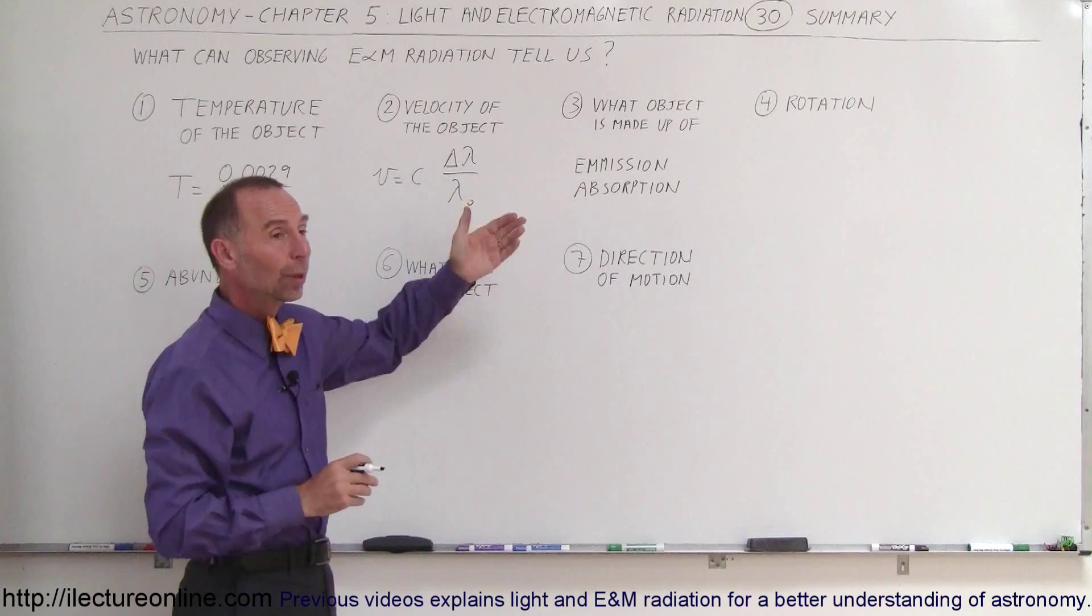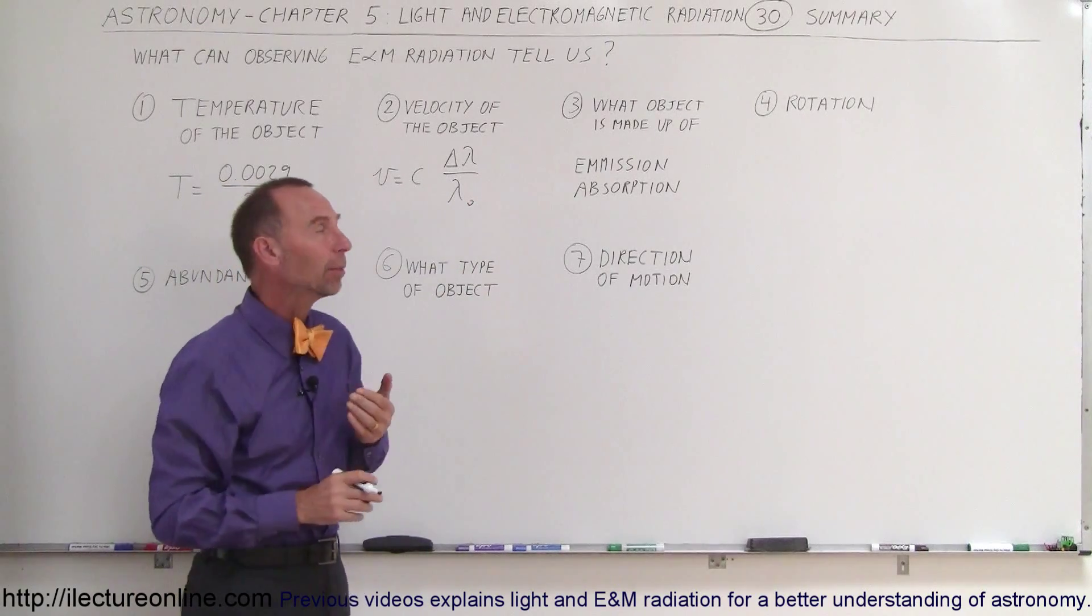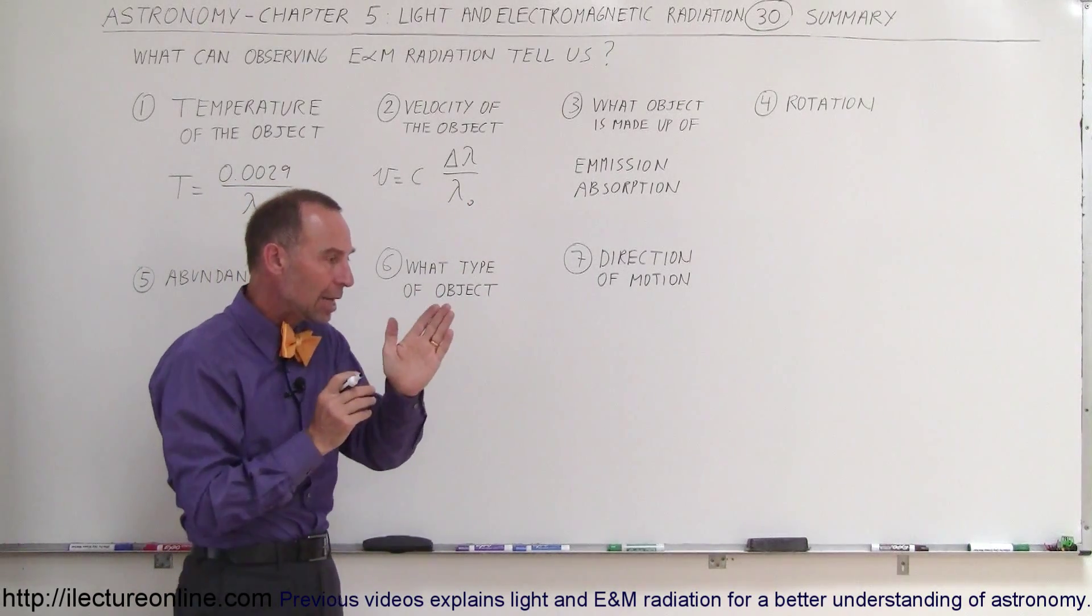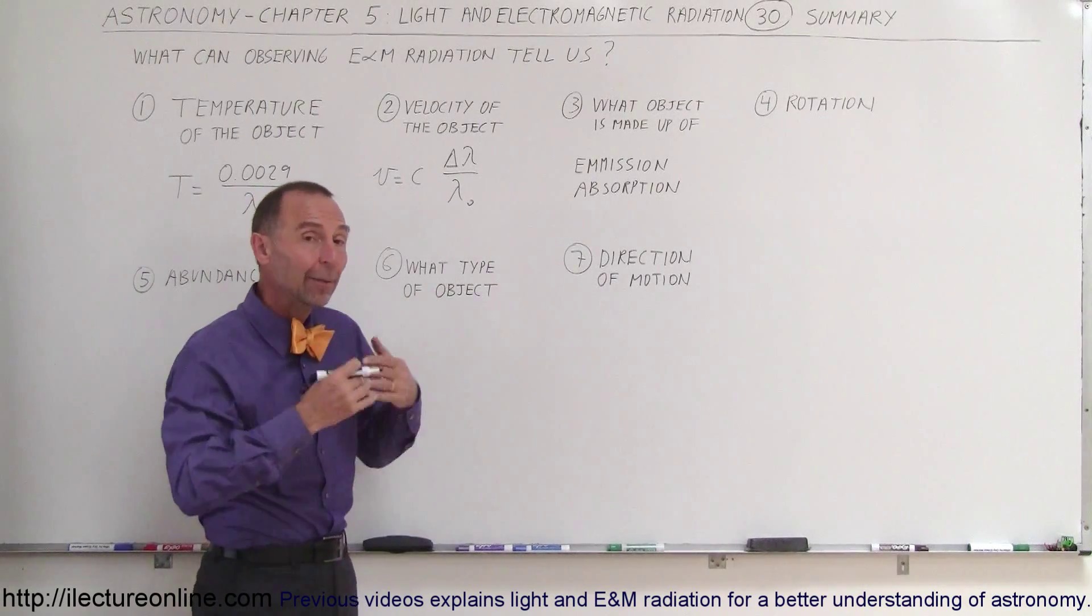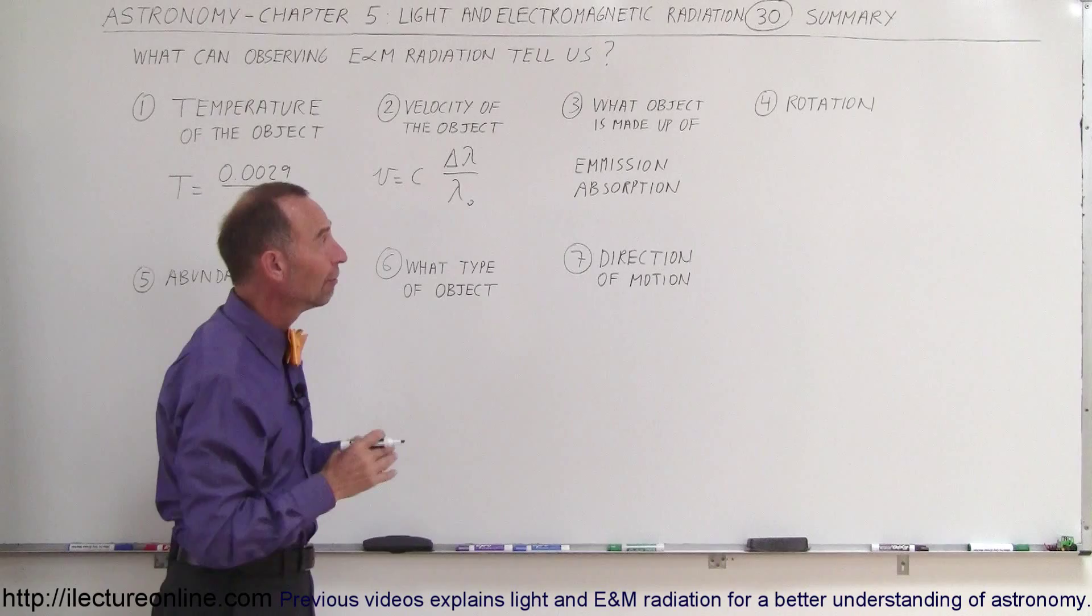Or, if it comes from a nebula, we can look at the emission spectrum of the nebula, and again, line up the known colors from laboratory experiments to the colors that we see there, and we can then determine the kind of elements that are found in there.